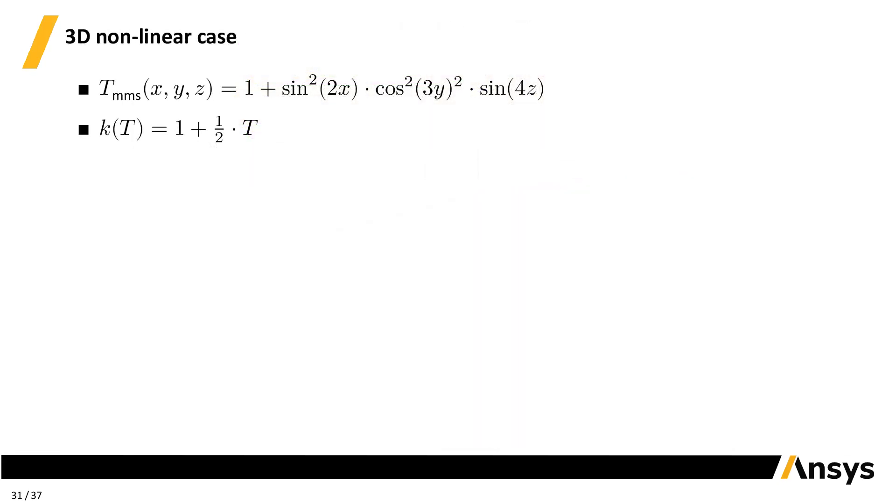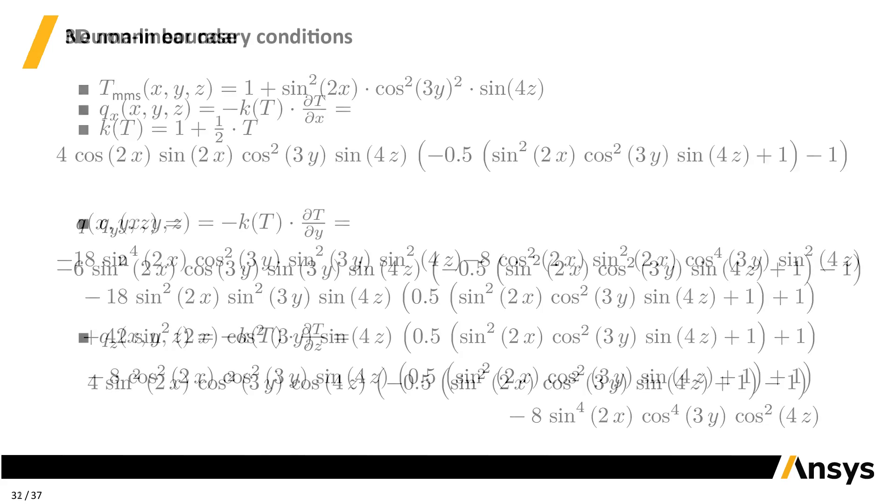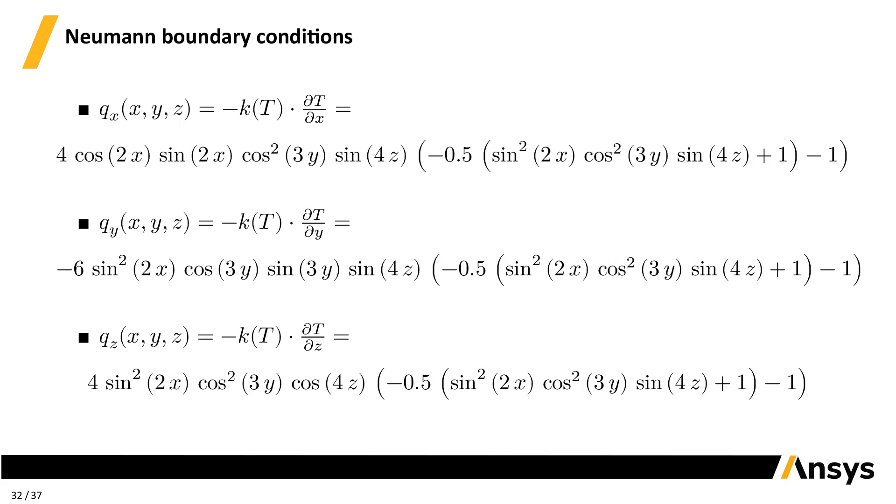Wanna have some fun? Let's go 3D and non-linear with Neumann boundary conditions. First, let's extend our manufactured solution into the z dimension. And since we are going wild, let's propose a temperature-dependent conductivity to render the problem non-linear. Here's the source term we need to have the manufactured expression as the solution of the heat conduction equation. Again, since we are going wild and putting Neumann boundary conditions in some faces, we need the heat fluxes as well. Luckily, Maxima can compute them for us.